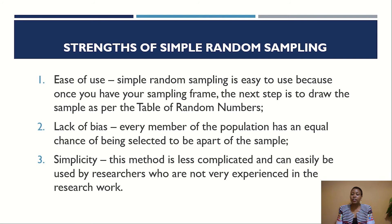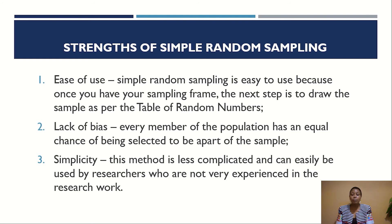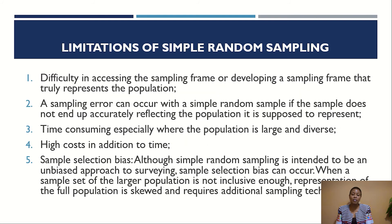What are the strengths of simple random sampling? First, it is easy to use, especially when you have an accurate sampling frame. Simple random sampling also lacks bias because every member of the population is given a chance to be selected. It is also a simple method that can be used by even those researchers who are not very experienced in research work.